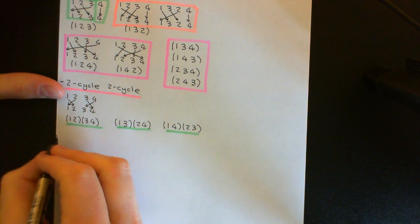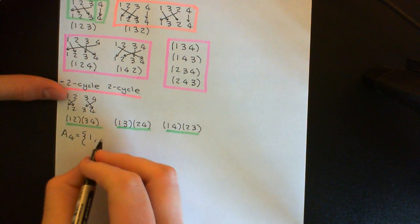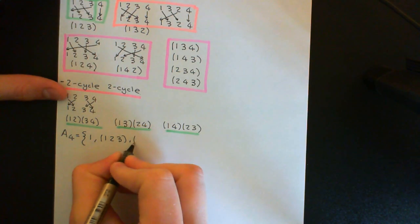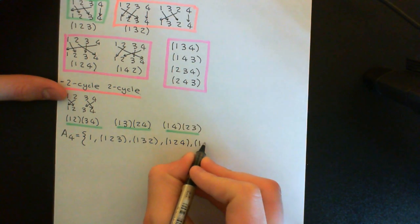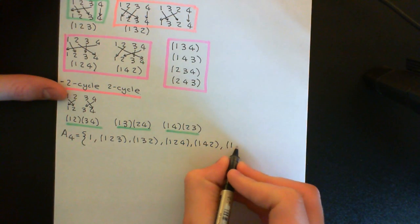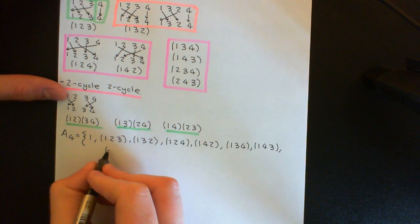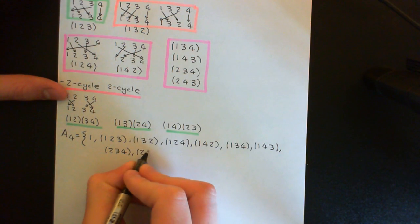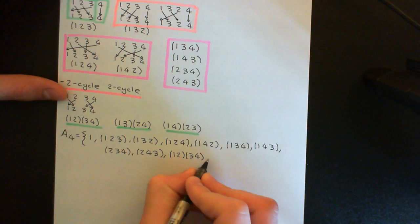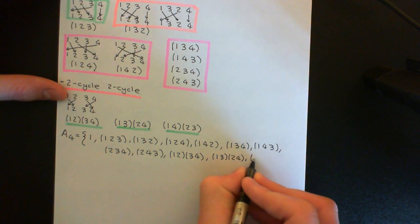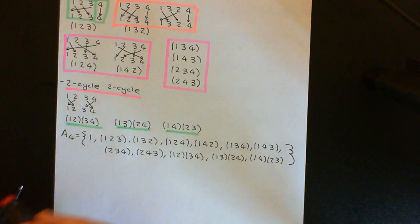To write A4 out in full: we have the identity; the eight 3-cycles — (1 2 3), (1 3 2), (1 2 4), (1 4 2), (1 3 4), (1 4 3), (2 3 4), (2 4 3); and then the three double transpositions — (1 2)(3 4), (1 3)(2 4), and (1 4)(2 3). Those in cycle notation are all 12 elements of the group A4.